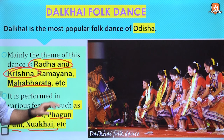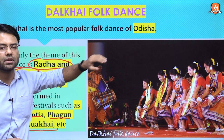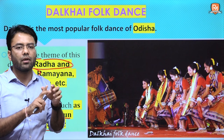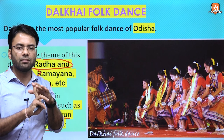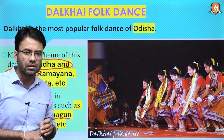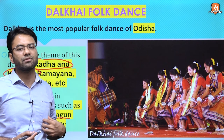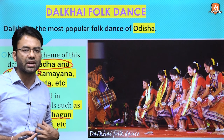Remember the keywords: the place is Odisha; the theme is Ramayana and Mahabharata, specifically Krishna and Radha; and the associated festivals are Bhai Juntia, Fagunpani, and Nakhai. These are the main names to remember.